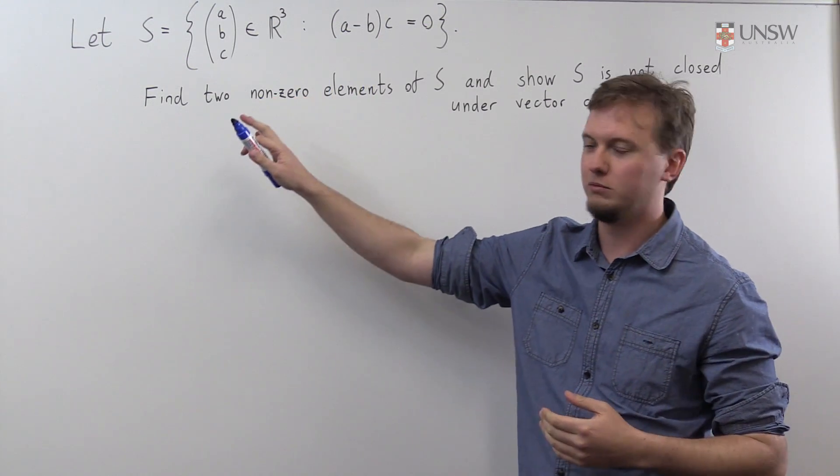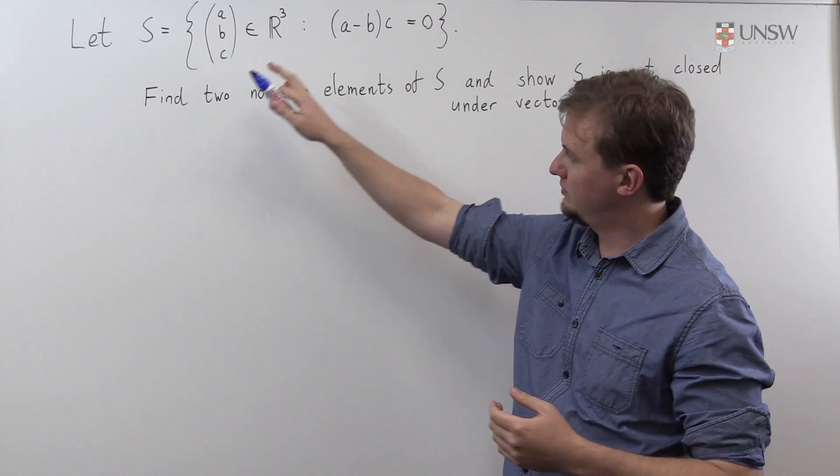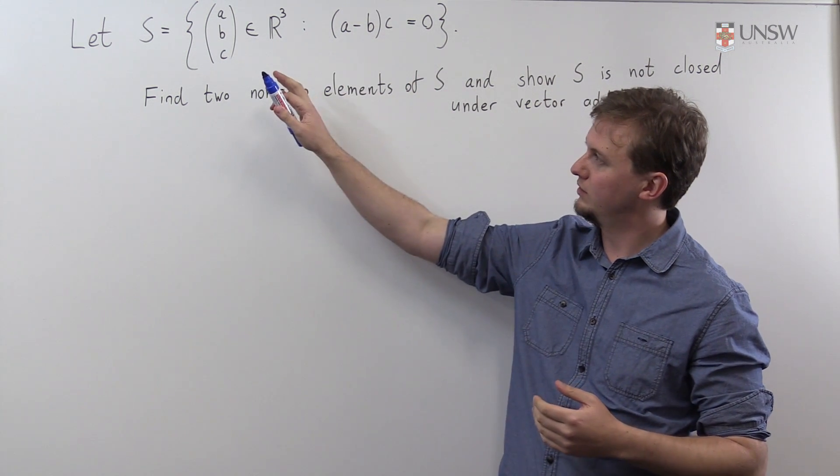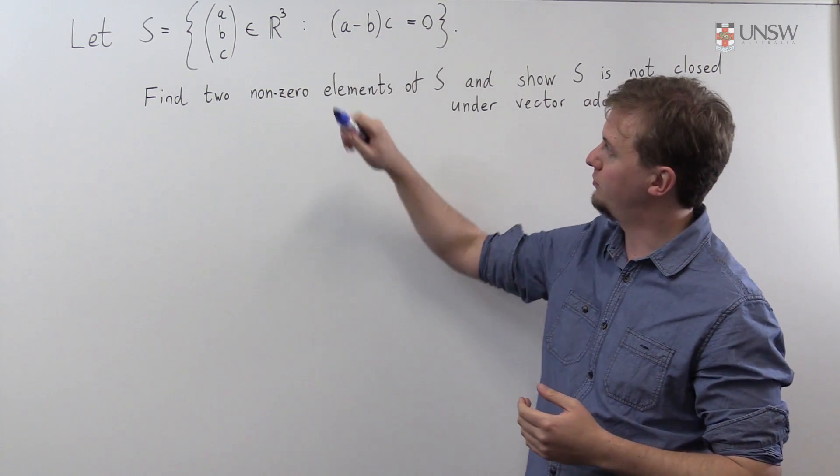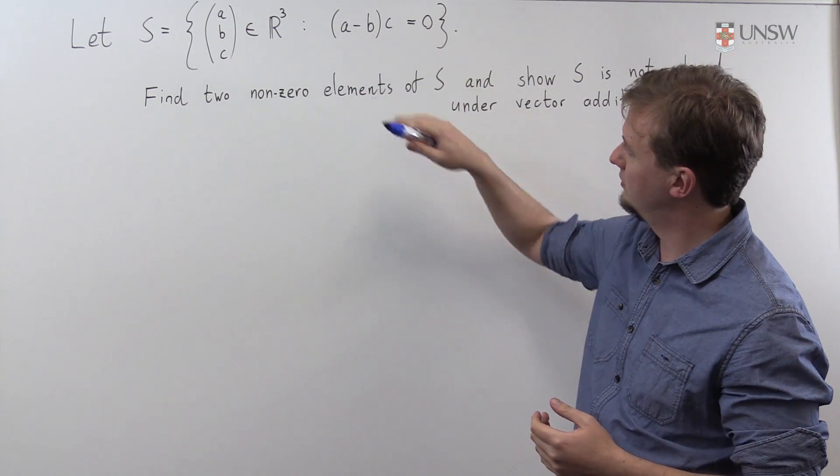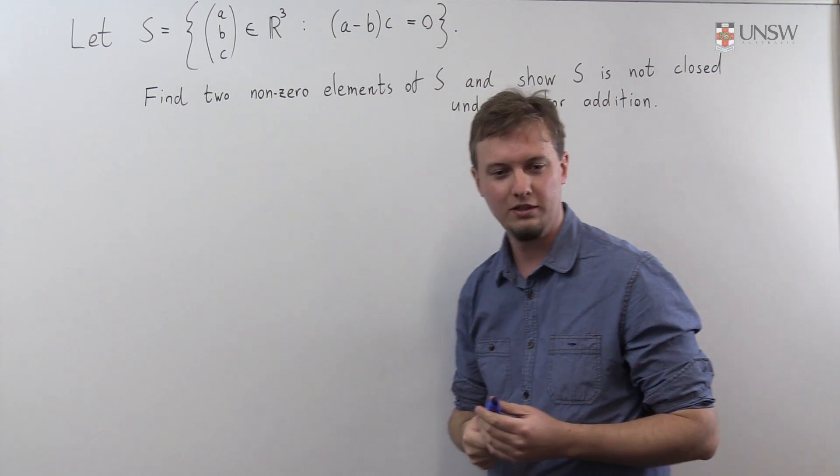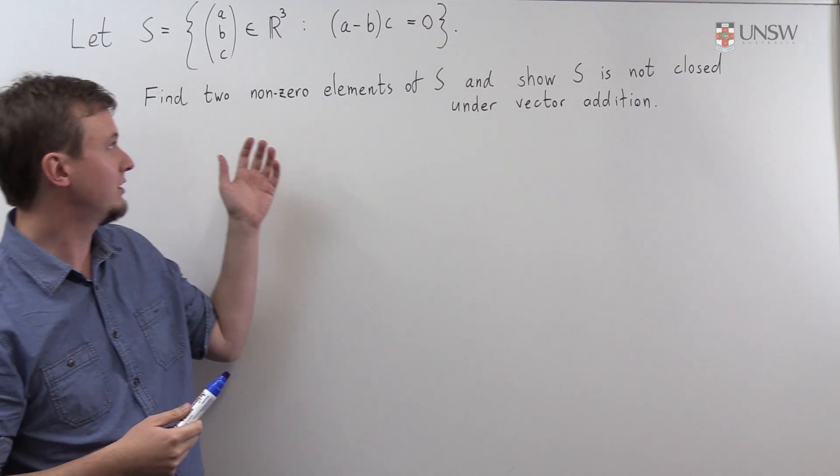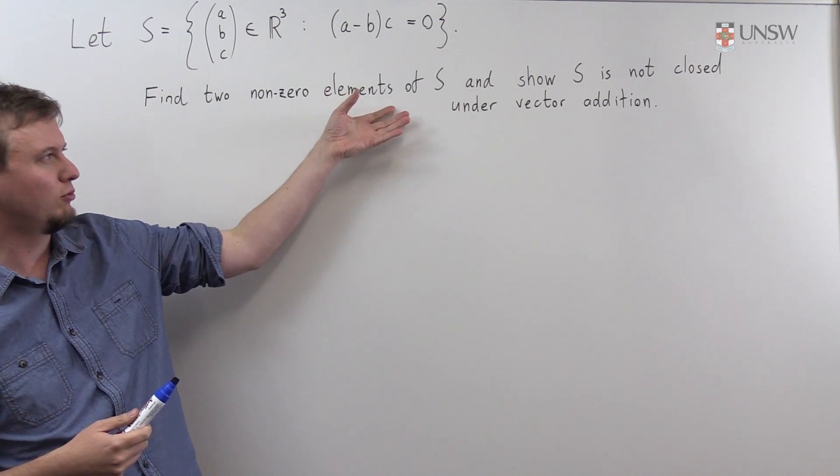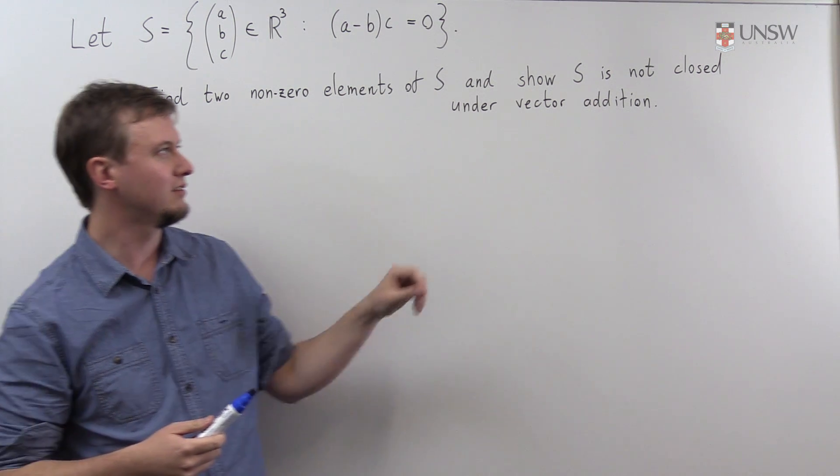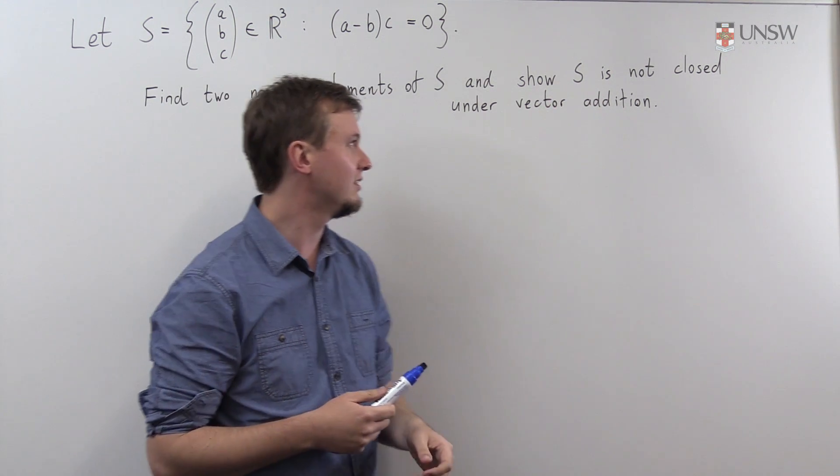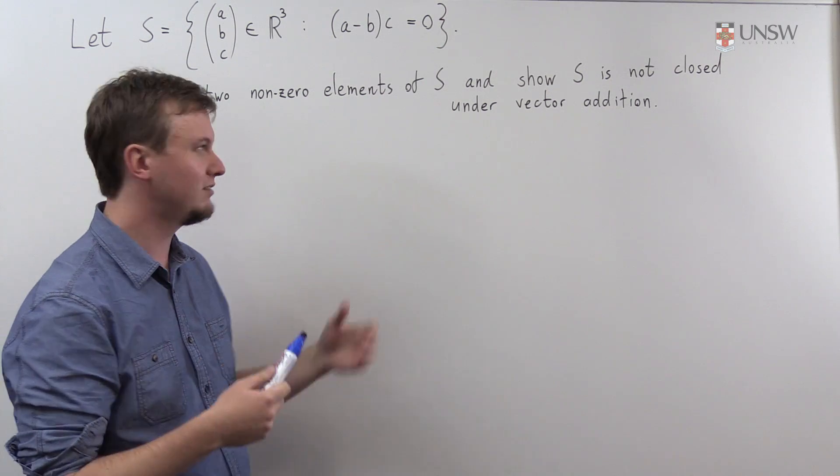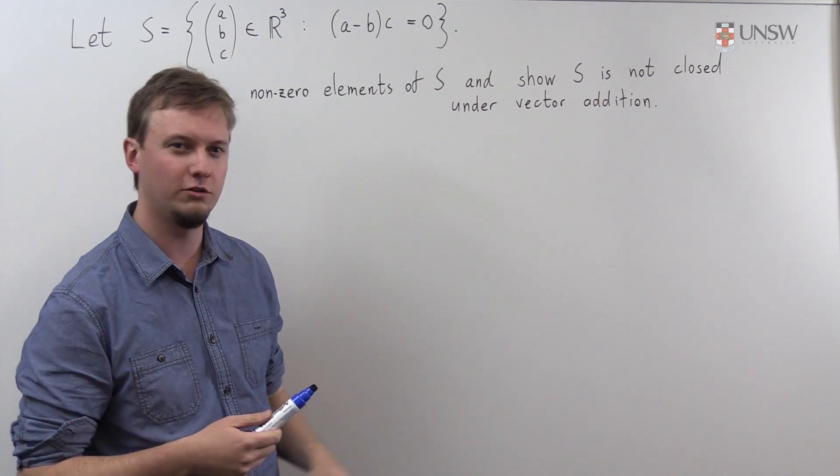So in this next example, we have a very similar looking set. We have a set of vectors from R³, and again, these vectors satisfy some equation. And we want to do something slightly different. We want to, firstly, find two non-zero elements from this set S. And we also want to show that this set is not closed under addition. So again, this set is not going to be a vector space, because it's not closed under addition.